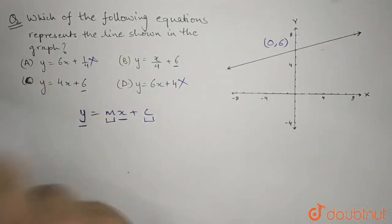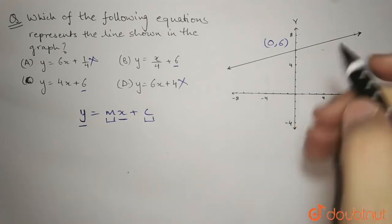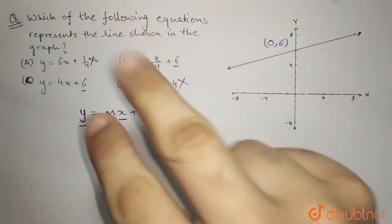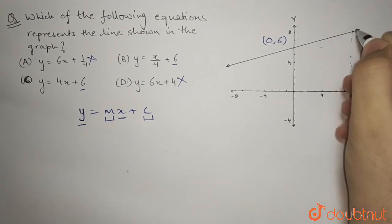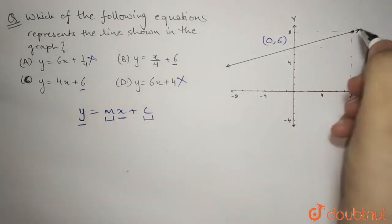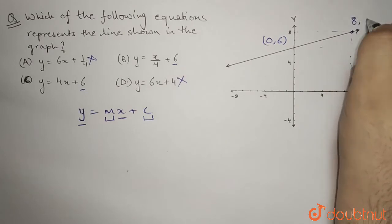Alright now we have to find the slope of this line. So for slope we need two points. I can see that this point here has coordinates 8 and 8.